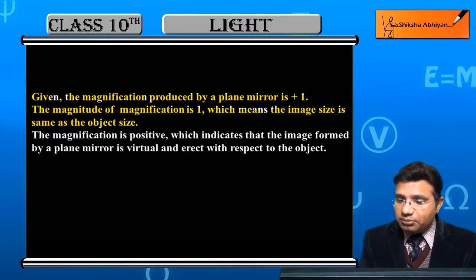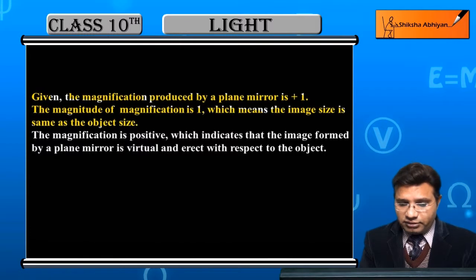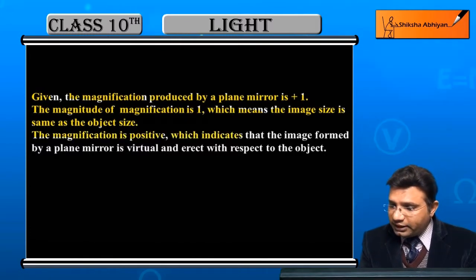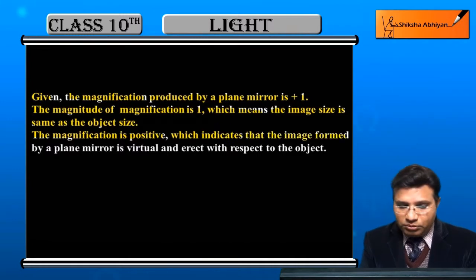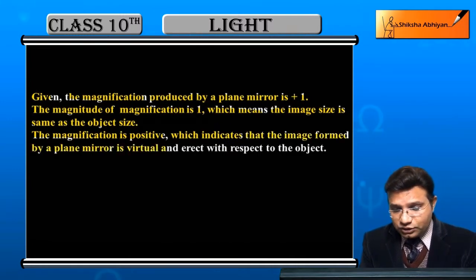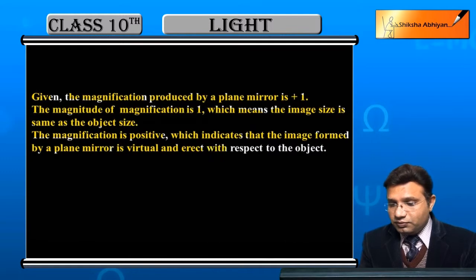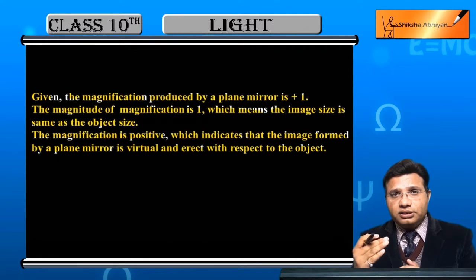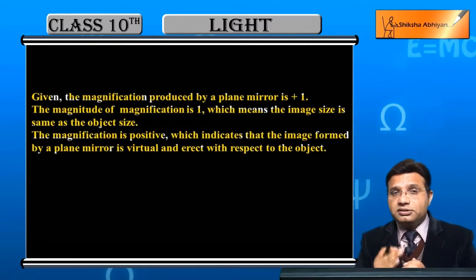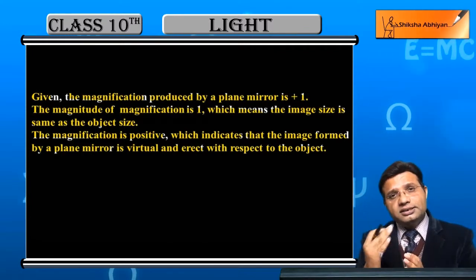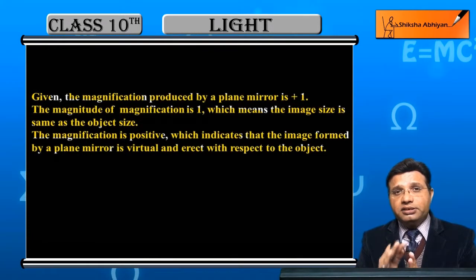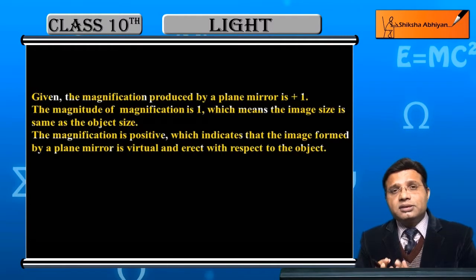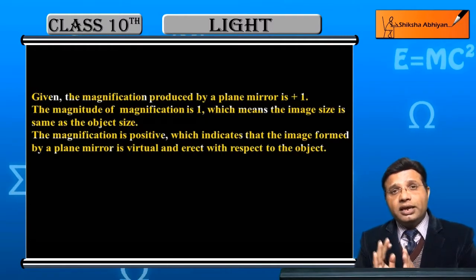Now this value is plus 1, meaning it is positive. The magnification is positive, which indicates that the image formed by a plane mirror is virtual and erect with respect to the object. The sign of magnification — whether positive or negative — tells us the nature of the image: whether the image is real and inverted, or virtual and erect. So positive means the image is virtual and erect.